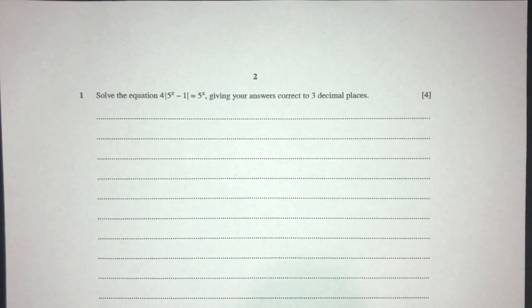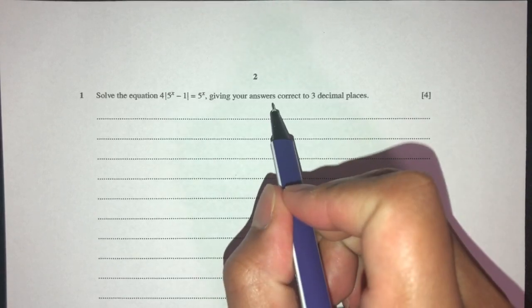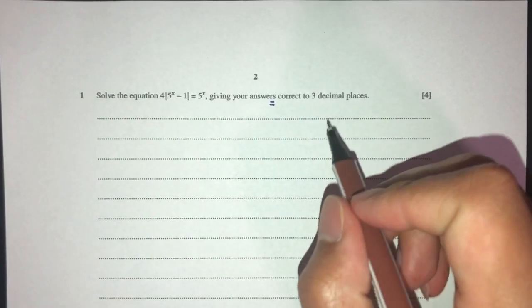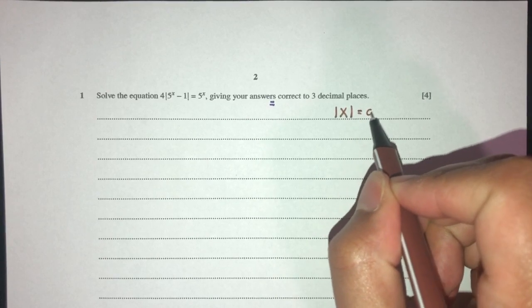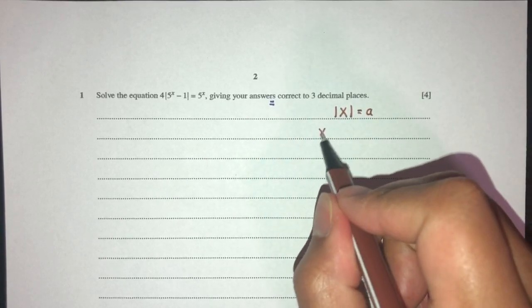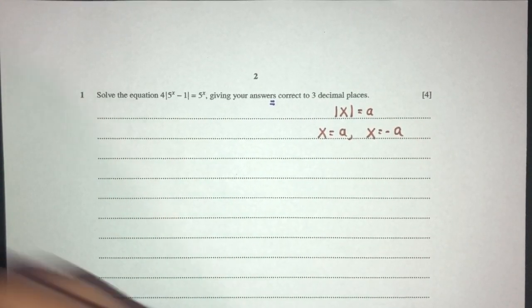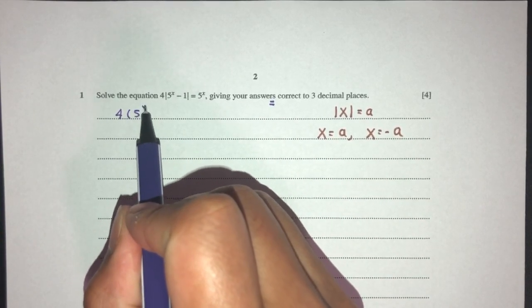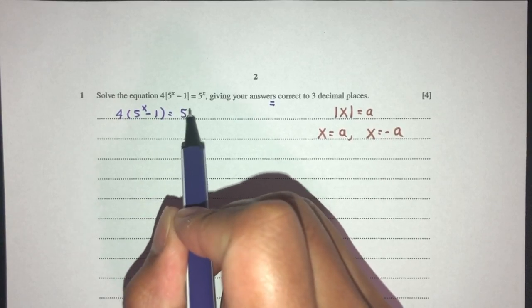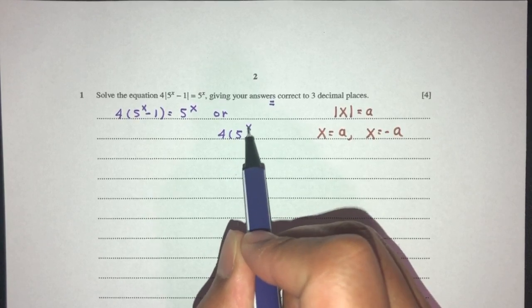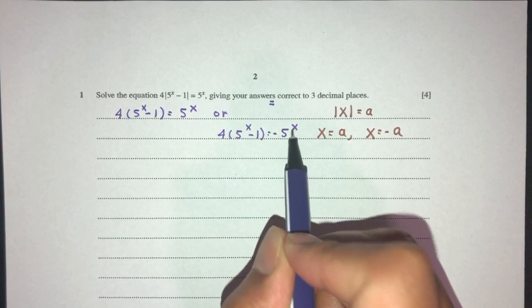Here we have question number one. Solve this equation, giving your answers correct to three decimal places. Something we have to know is very simple - how do you break this down? Usually when you have modulus of x equal to A, you can say x is equal to A or x is equal to minus A. So similarly, here we can apply the same concepts. That should be 4(5^x) - 1 is equal to 5^x or 4(5^x) - 1 is equal to minus 5^x. Let's solve one by one.